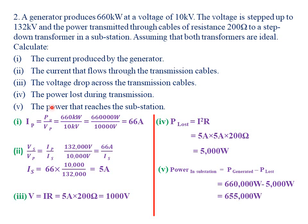For part (v), we find the power that reaches the substation. The power at the substation equals the power generated minus the power lost in transmission. The power generated is 660 kilowatt, which is 660,000 watt. The power lost is 5,000 watt, computed in part (iv). So 660,000 minus 5,000 gives 655,000 watt as the power reaching the local substations.